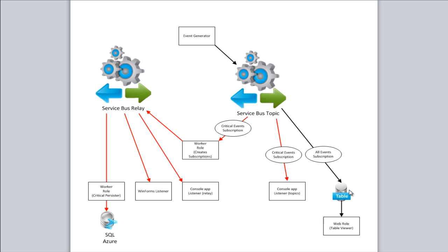We have a listener that's listening in for all events, regardless of type. It gets picked up and written into a Windows Azure table. There's also a WebRole viewer that shows all of the events captured in that table. When the worker role starts up, it creates a couple of subscriptions: an all events subscription and a subscription for critical events. The code that runs to persist all events to the table exists in the worker role.